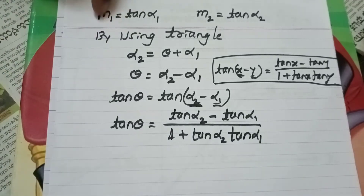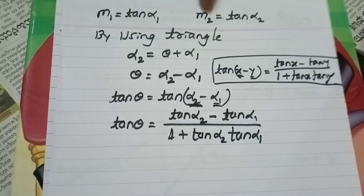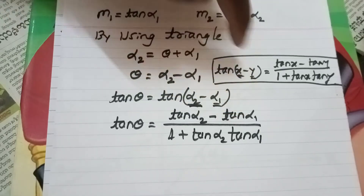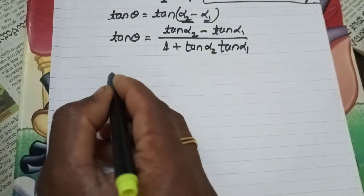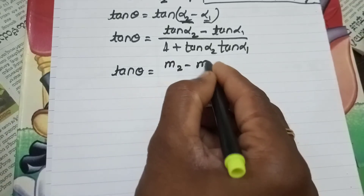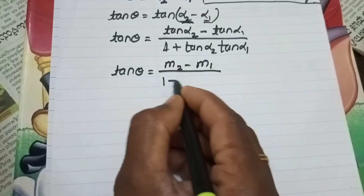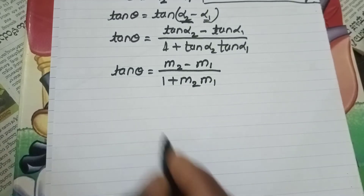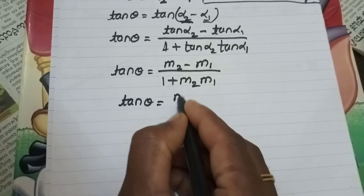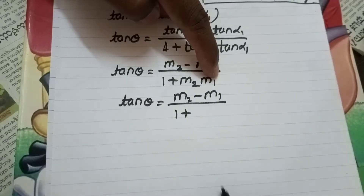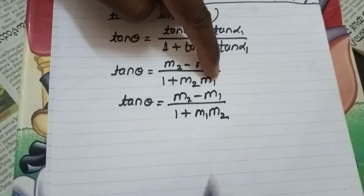Now substituting M1 equal to tan(alpha1) and M2 equal to tan(alpha2), we get tan(theta) is equal to M2 minus M1 divided by 1 plus M1 times M2.